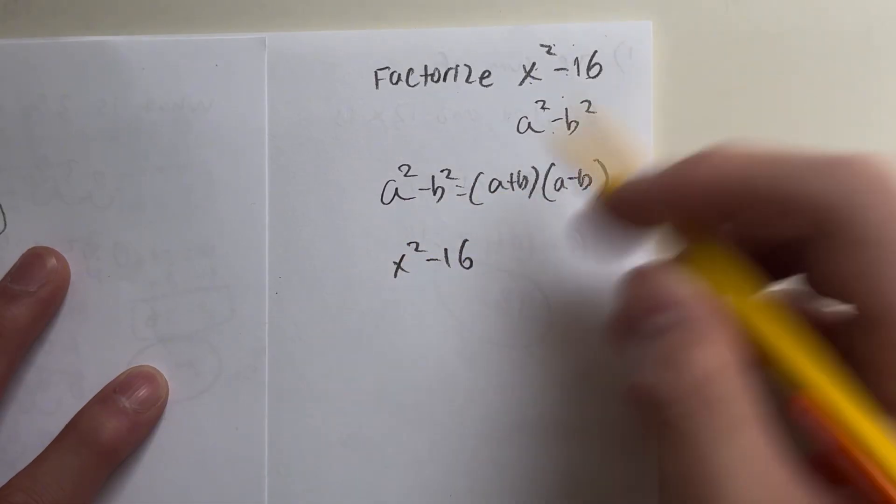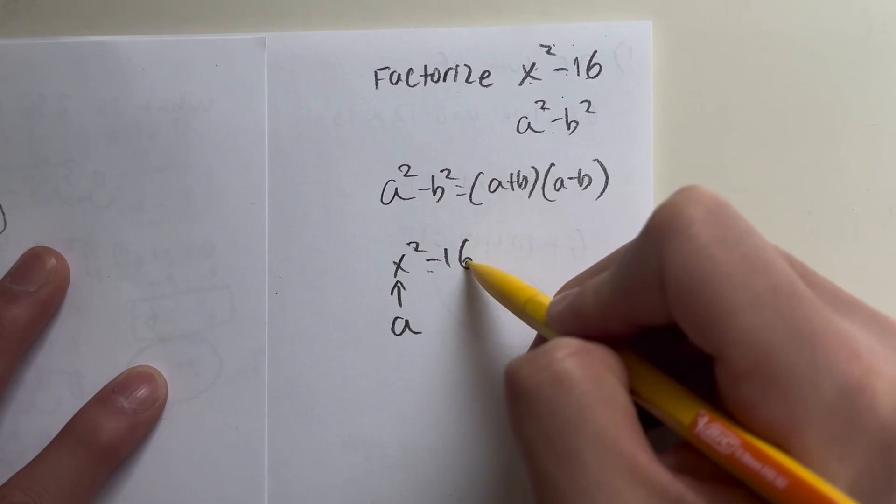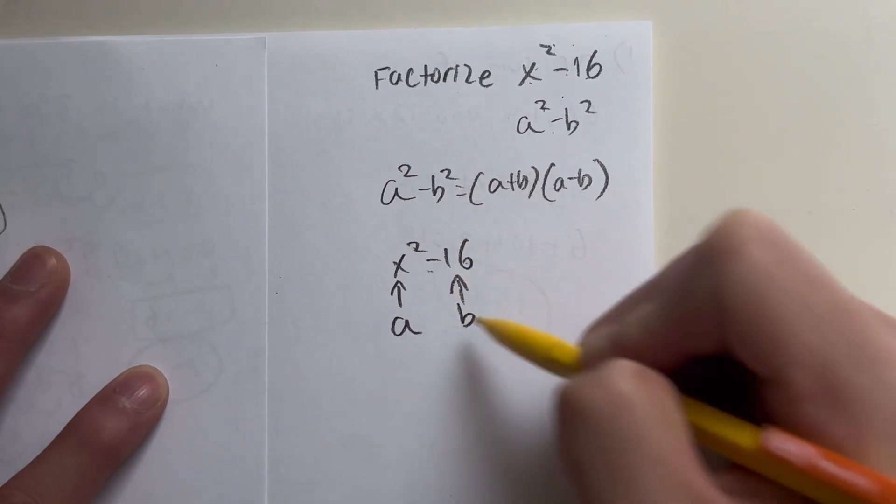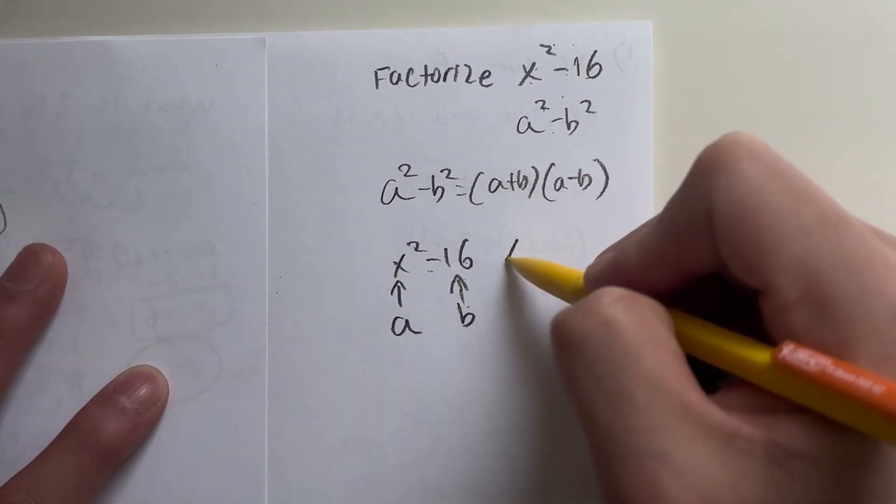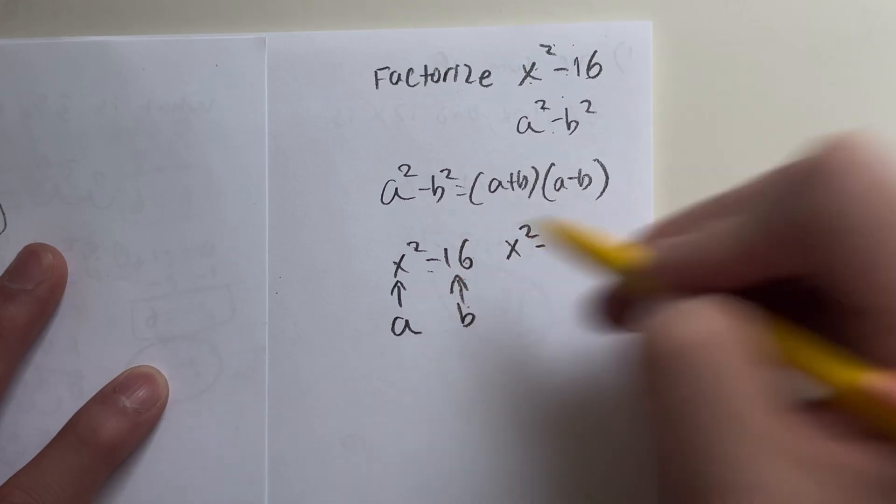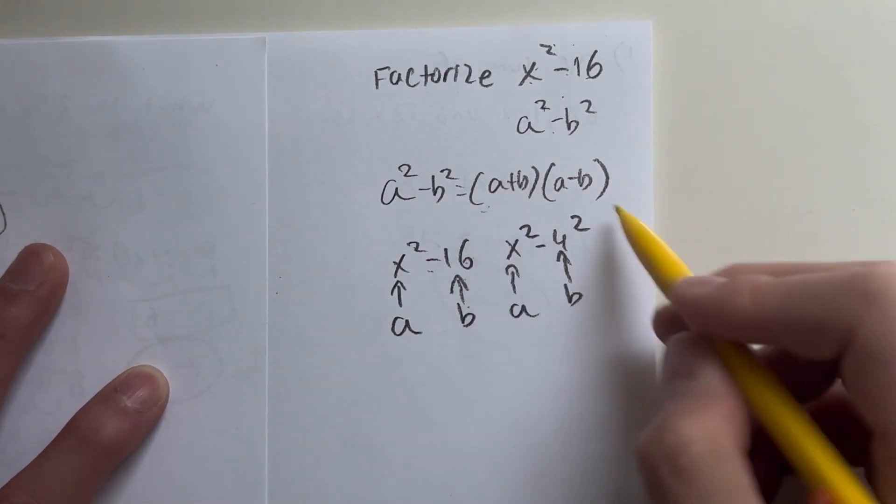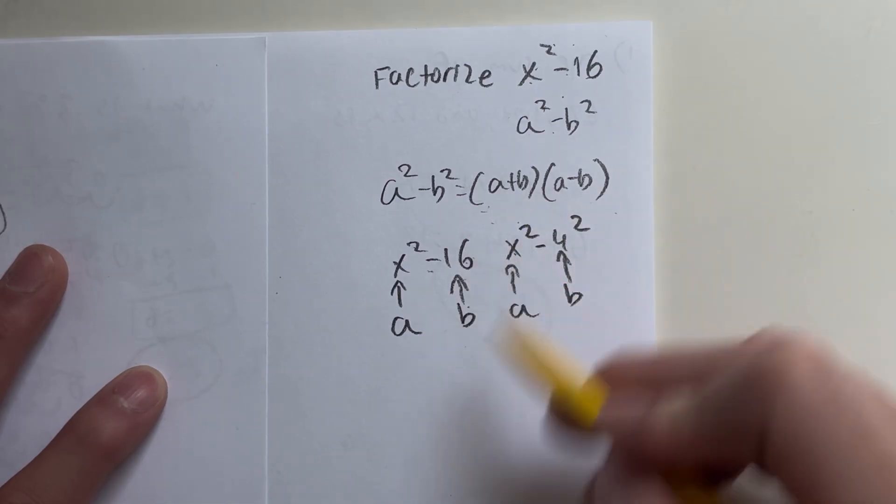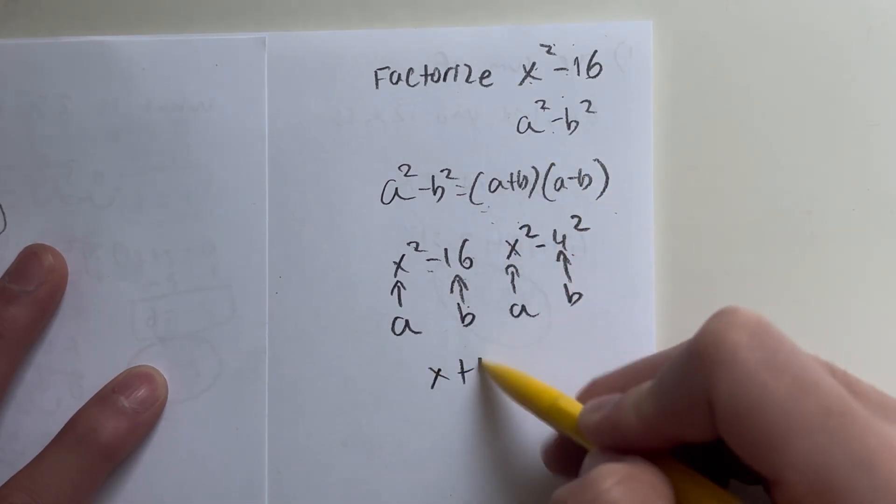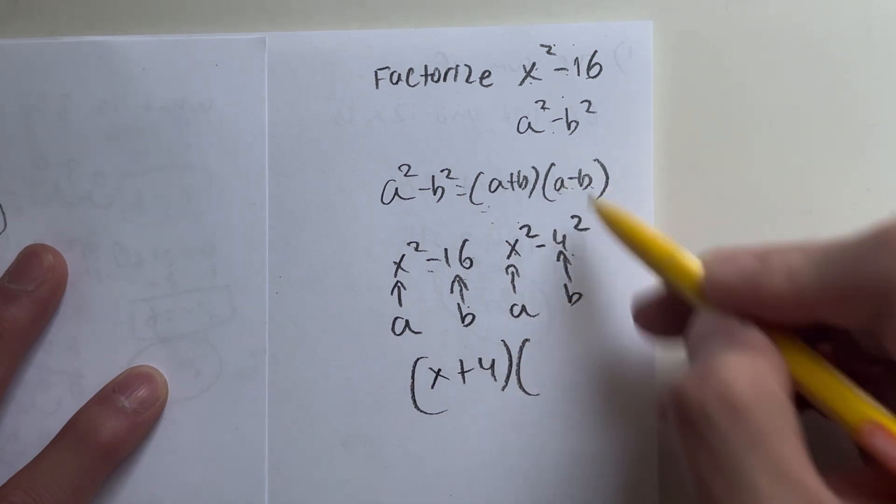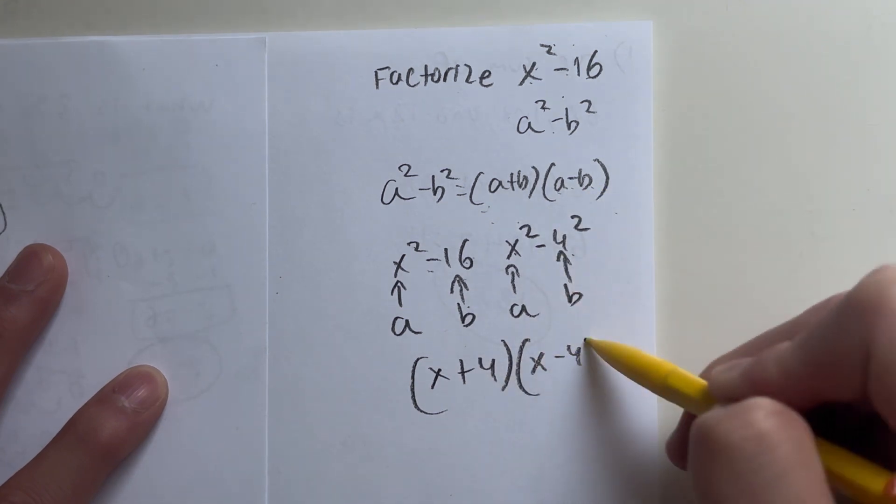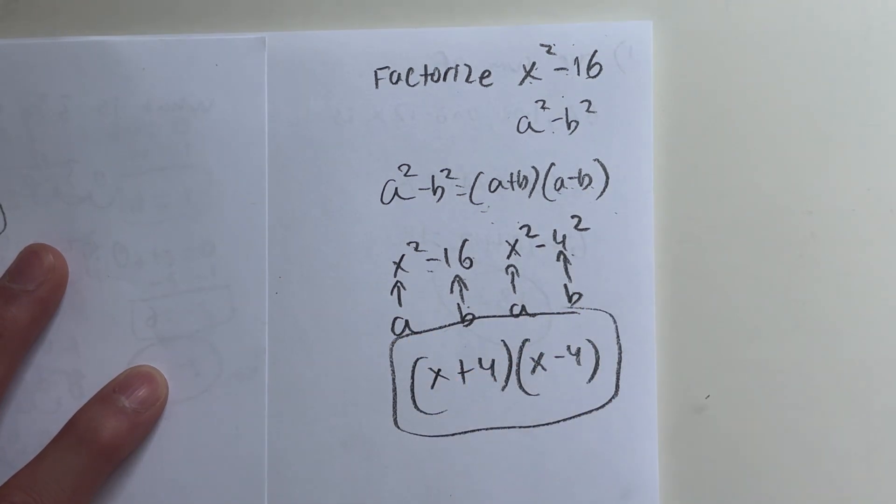So in x squared minus 16, what are my a and b values? Something squared, that's my a value, minus something squared, that's going to be my b value. But first, I'm going to write that as x squared minus, what's the square root of 16? 4 squared. That's my a, and that's my b. Plug it into my equation, a plus b, same as x plus my b value, which is 4, times a minus b, which is x minus 4. And that right there is your factorized answer.